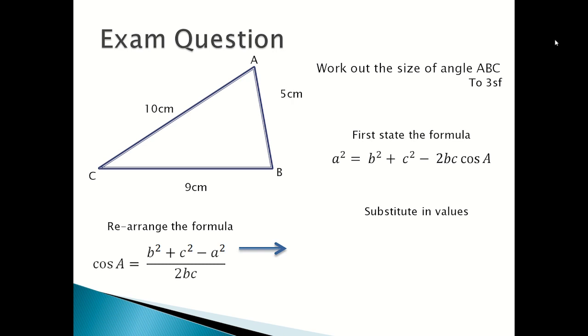Next you substitute in values, and you will get cos A equals 5 squared plus 9 squared minus 10 squared divided by 2 times 9 times 5. How you would know what A squared is in this question is the side that is opposite to the angle you are looking for. And the side opposite to the angle we are looking for is the side of 10 centimeters.